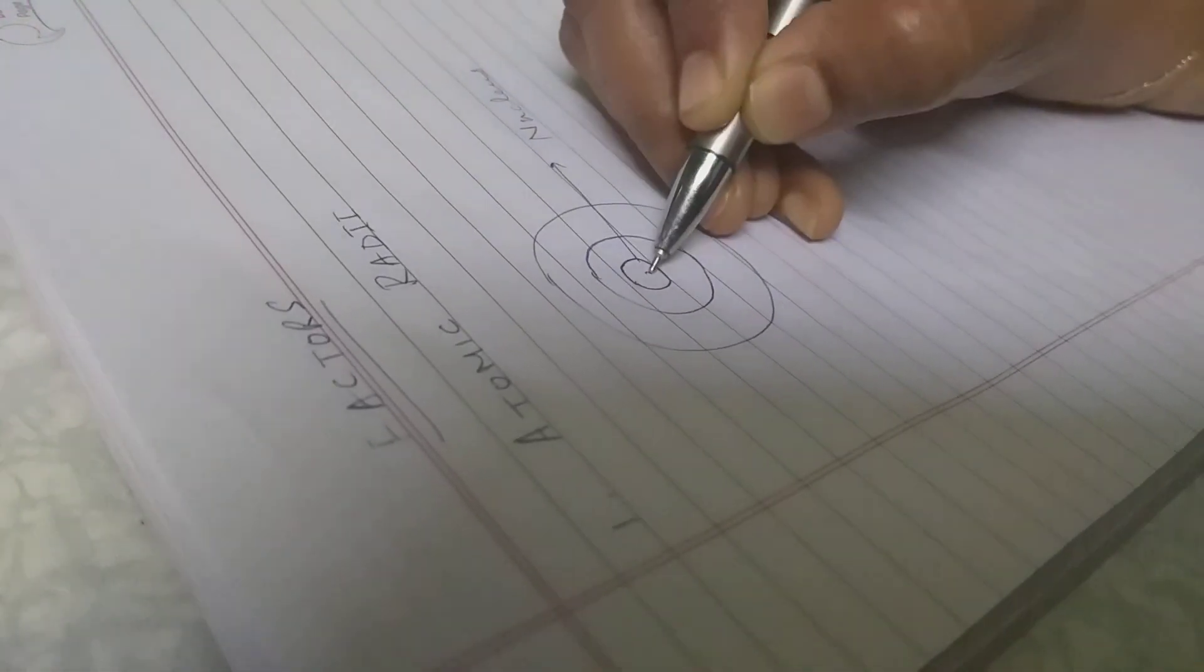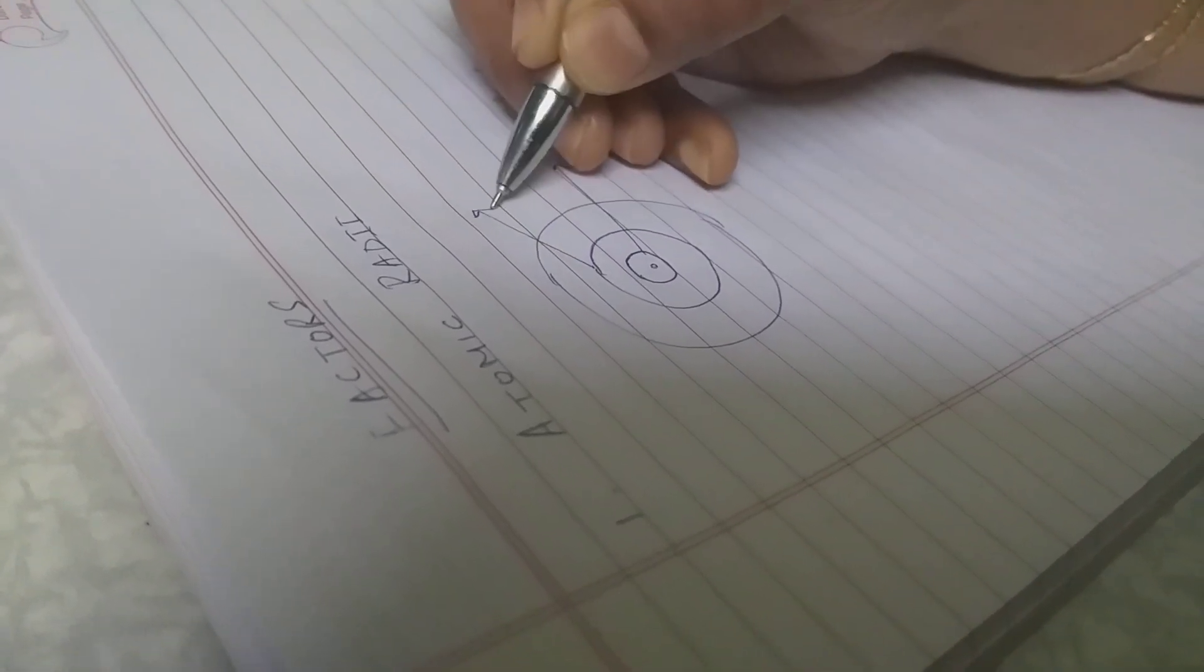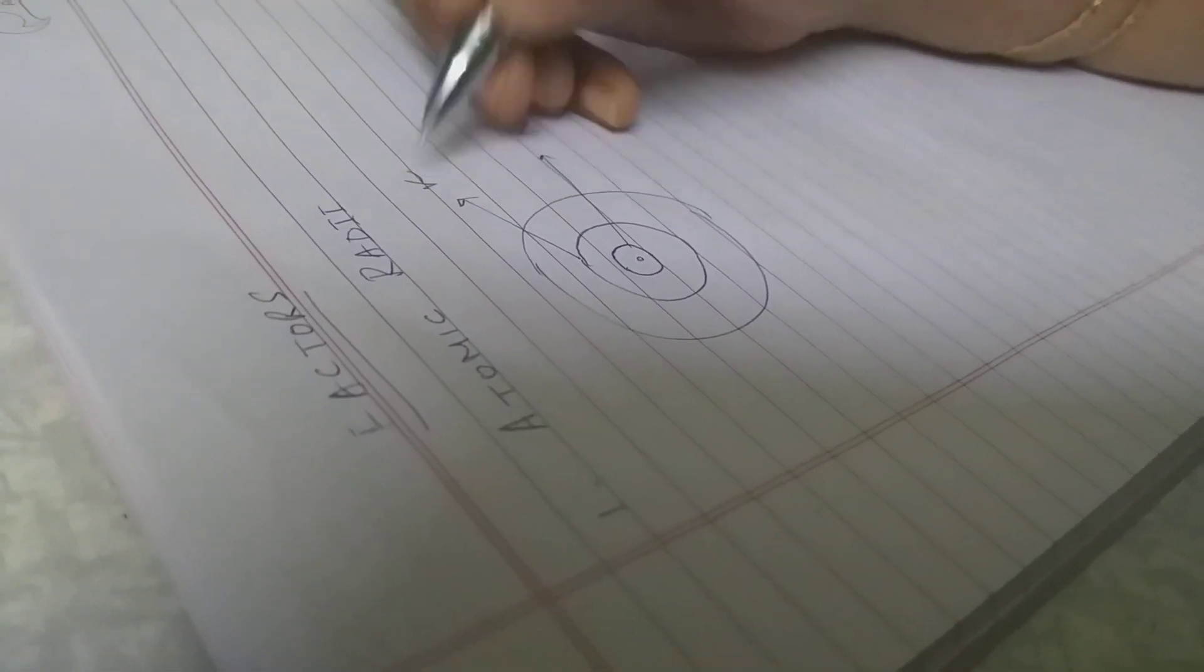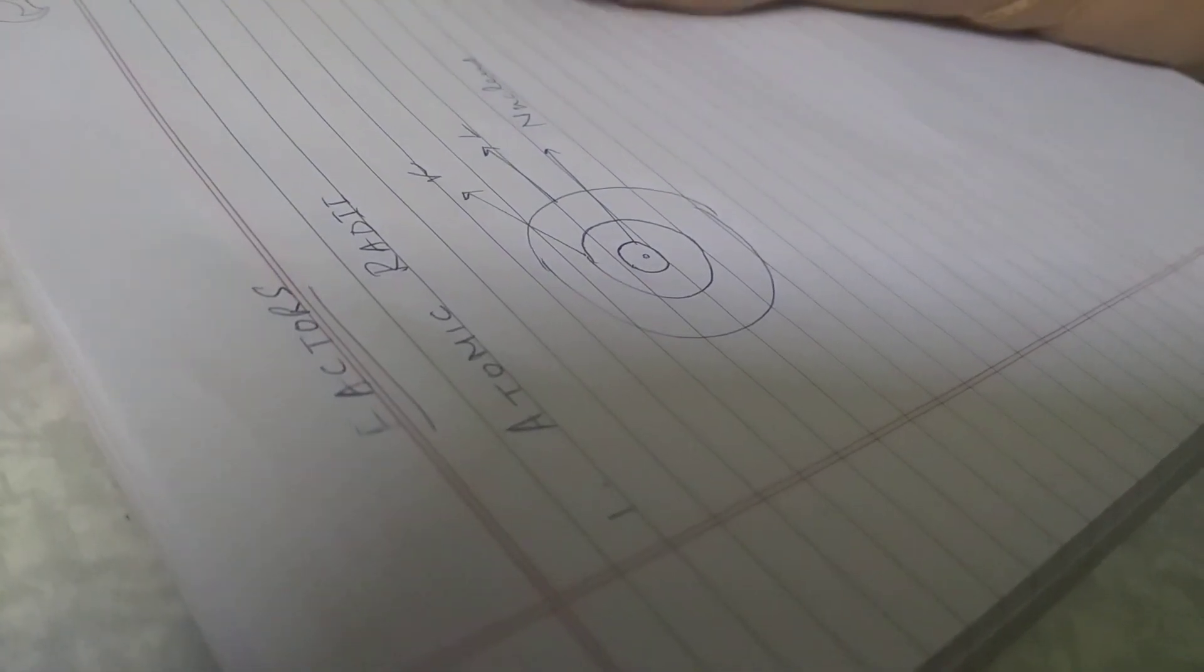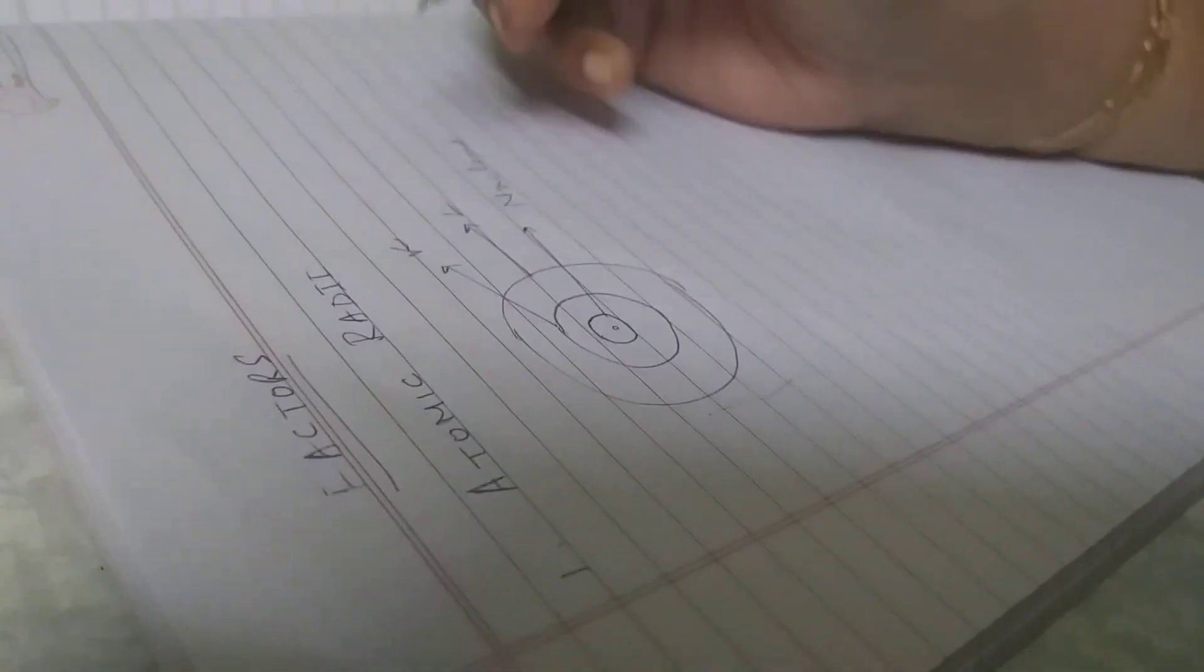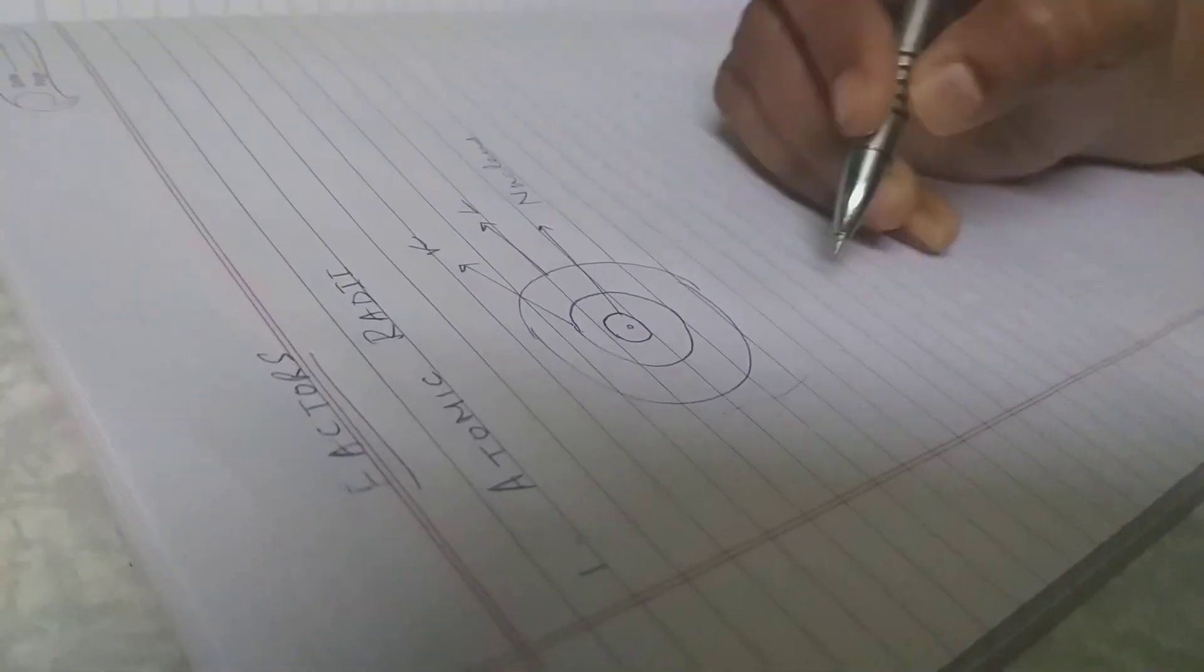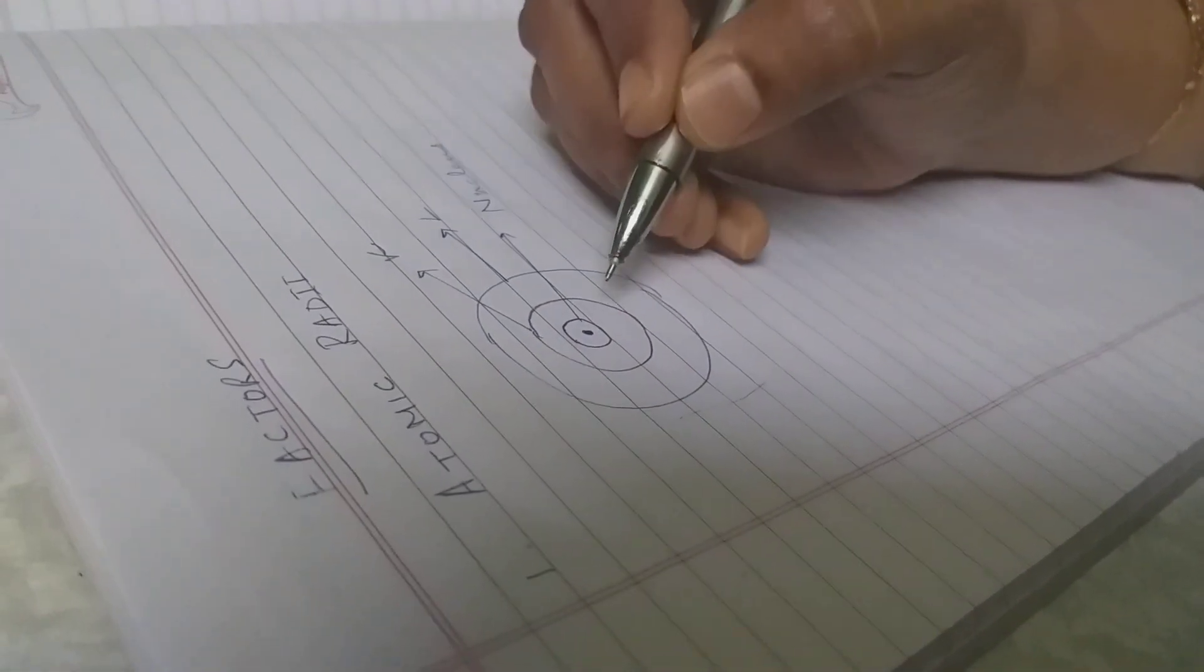So this is called the nucleus, that is the center of an atom. This is the nucleus, you know that. And this is, if you say, it is the K shell or the first shell. This is the L shell or the second shell. This is actually the structure of an atom.